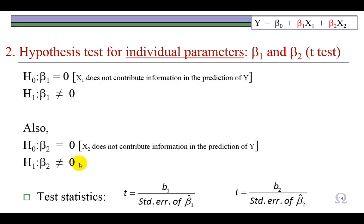To test these two sets of hypotheses, we use a t-test. And the t-statistic would always be the coefficient divided by its standard error for β₁ and for β₂.